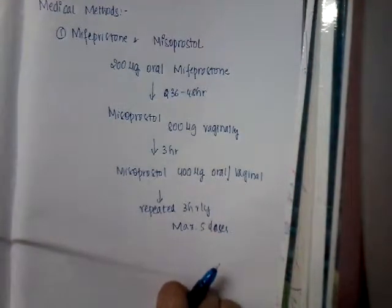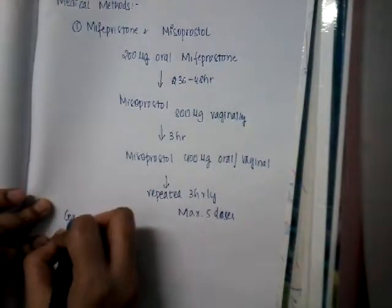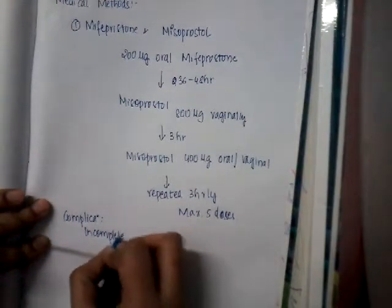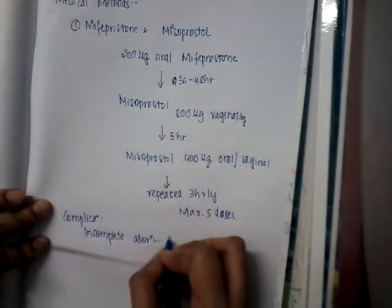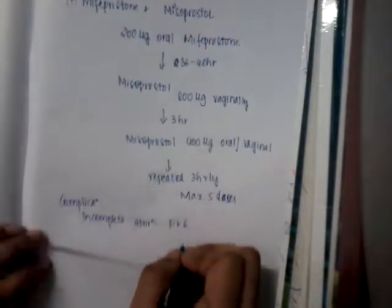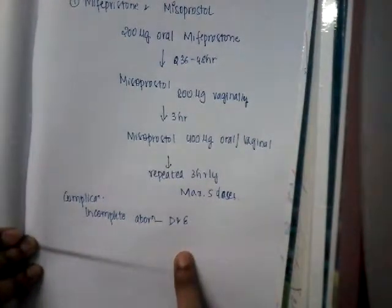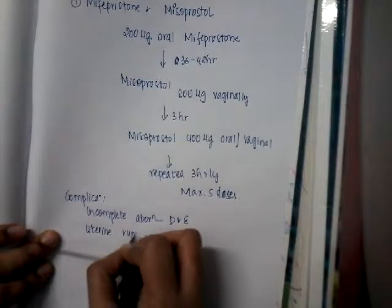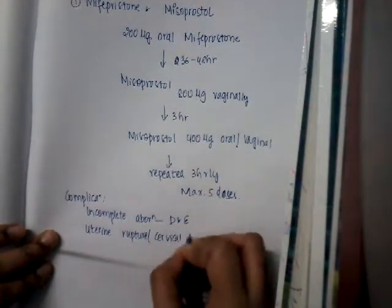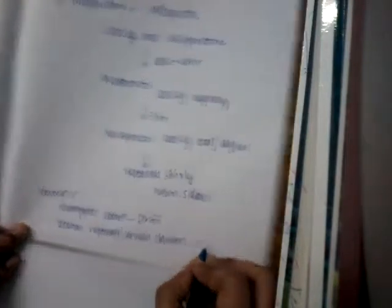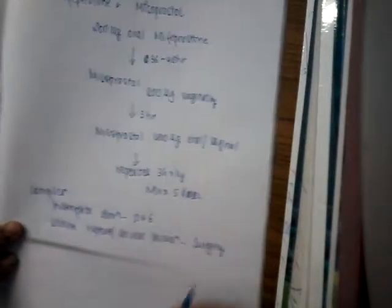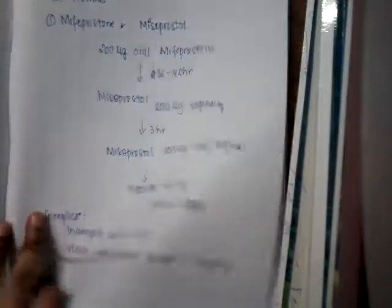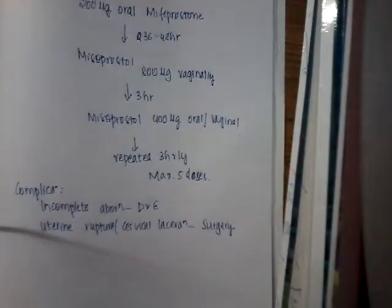The main complications of these medical methods include: incomplete abortion — if products are retained, dilatation and evacuation must be performed; infection — treated with antibiotics; uterine rupture or cervical lacerations — requiring surgical management; and hemorrhage, which must also be treated accordingly.